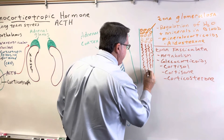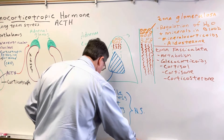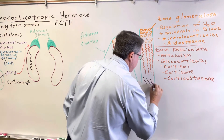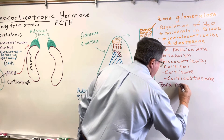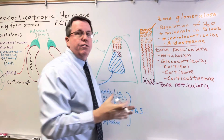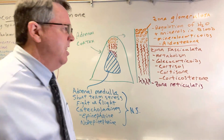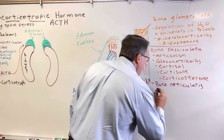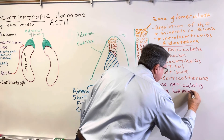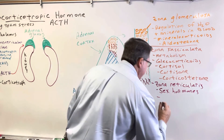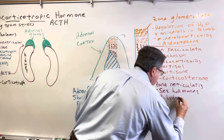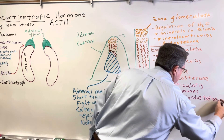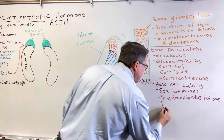Then we have one more section — in a net-like structure — and we're going to call this the zona reticularis. This is going to be responsible for making sex hormones. For the most part, it does testosterone more than the female sex hormones; some even say it basically stimulates masculinity. The main hormone it's going to release is something called dehydroepiandrosterone, better known as DHEA.